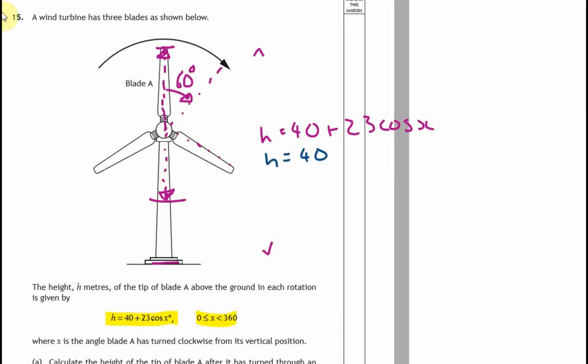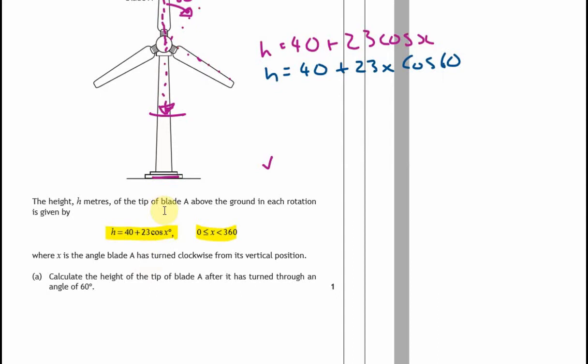Obviously the blade's going to move around, so sometimes it's going to be over here, sometimes over here. The lowest point is when it's down here, and the highest point is when it's up here. Calculate the height of the tip after it's turned through 60 degrees. Well, very simple. We're just going to substitute it. h is going to be equal to 40 plus 23 times cos of 60. Let's get our calculators out. That's going to give us 51.5. Don't forget units. 51.5 meters. So we get one mark for that.